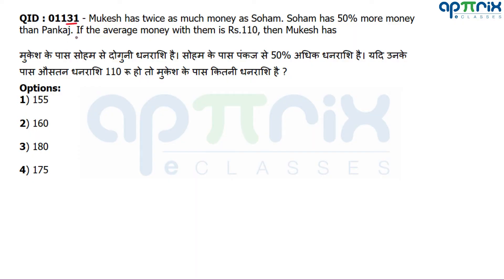Question number 31: Mukesh has twice as much money as Soham. Soham has 50% more money than Pankaj. If the average money with them is rupees 110, then how much money does Mukesh have? It's a very easy question. I will assume Pankaj's value as base. Average is 110, so total sum will be 330.